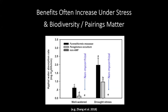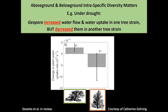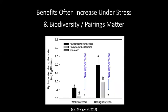Biodiversity and pairings between plants and fungi matter. In the well-watered version, high water absorption rates are better than non-mycorrhizal, but in the drought stress version, we get an even bigger effect. You can also see two different mycorrhizal species performing differently — because just like in a community, different species perform different tasks better or worse.